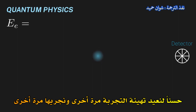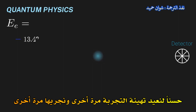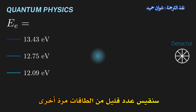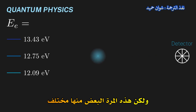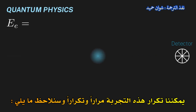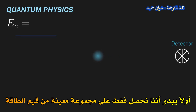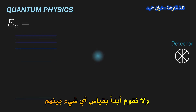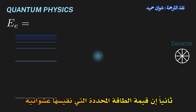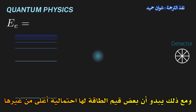Let's reset the experiment and give it another run. We only measure a few energies again, but this time some of them are different. We can repeat this experiment over and over again and we will notice the following: it seems that we only get a certain set of energy values, never measuring anything in between. The specific energy value that we measure is random; however, it does seem like some energy values have a higher probability than others.